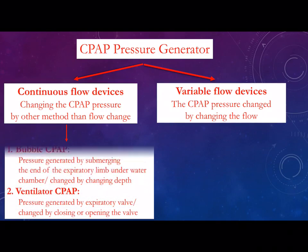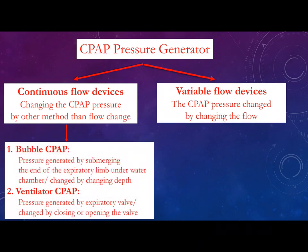An example of continuous flow CPAP is the famous bubble CPAP, where pressure is delivered by submerging the end of the expiratory limb under the water chamber. The pressure is changed by changing the depth of the end of the expiratory limb — increasing the depth increases the pressure. Another example is the ventilator CPAP, where the expiratory limb is connected to the ventilator and we increase or decrease the CPAP pressure using the PEEP valve.